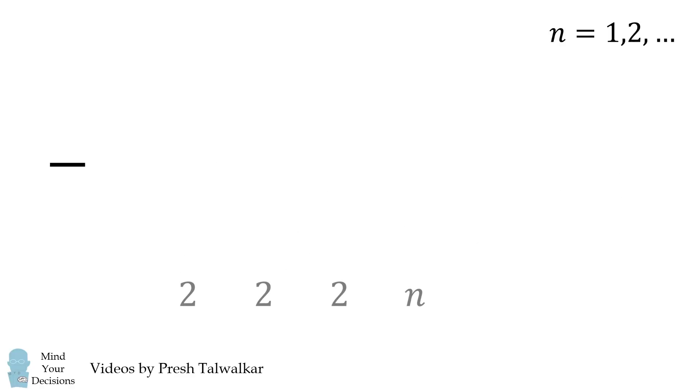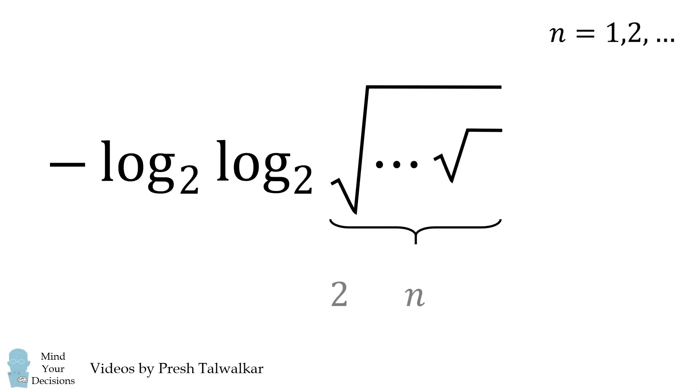Let's write the following: negative log base 2 of log base 2. Now, we are going to iterate the square root function a total of n times.